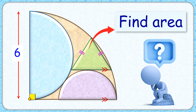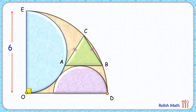Welcome everyone. This interesting question has two semicircles and an isosceles triangle inside a quadrant with radius six centimeters. The base of this isosceles triangle is parallel to the base of the quadrant. With this limited data, we have to find the area of the isosceles triangle. Let's check the solution.